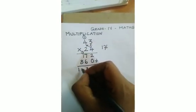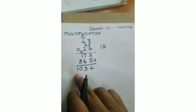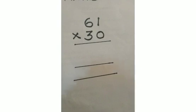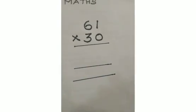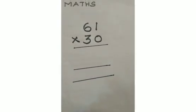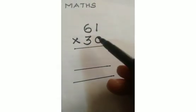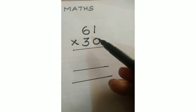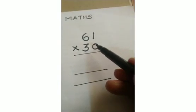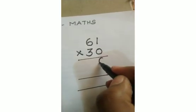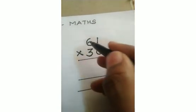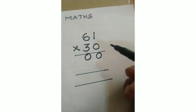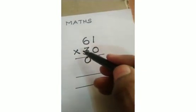Here you are going to multiply 61 into 30. In the ones place, 0 is here. Anything you multiply with 0, you get only 0. So 0 into 1 is 0, and 0 into 6 is also 0. As I already told, the 3 is in the tens place.